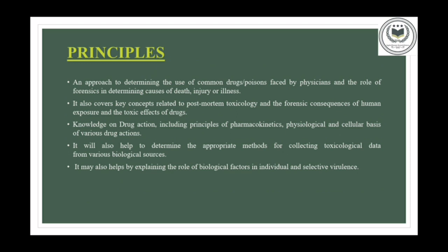Now we are going to discuss about the basic principles of forensic pharmacology. The first principle is to determine the use of common drugs or poison — like its role to cause death, injury or illness to a corresponding human being. The next one is a key concept related to post-mortem toxicology, such as what led that human body to death or which kind of drug or poison caused death, injury or illness. The third one is understanding of drug action including pharmacokinetics principles and the physiological and cellular underpinning of different pharmacological effects.